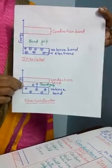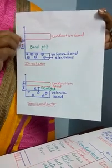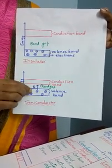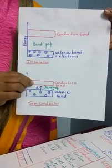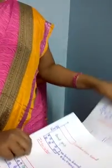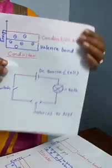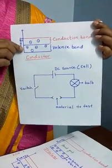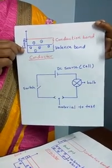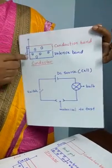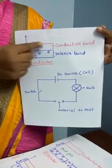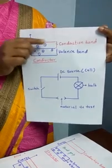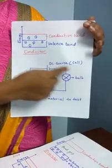In a semiconductor, the band gap is less compared to the insulator, so some of the electrons are able to jump from the valence band to the conduction band. In a conductor, there is no band gap between the valence band and the conduction band, so the electrons move easily through both bands and are able to carry electrical energy through the material.